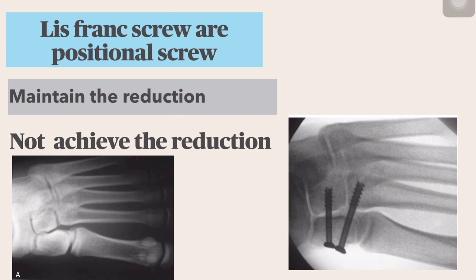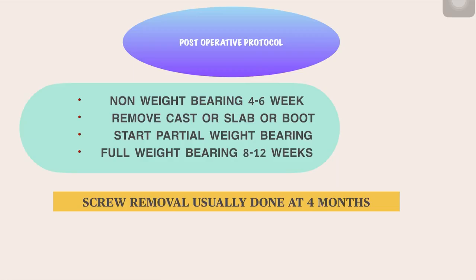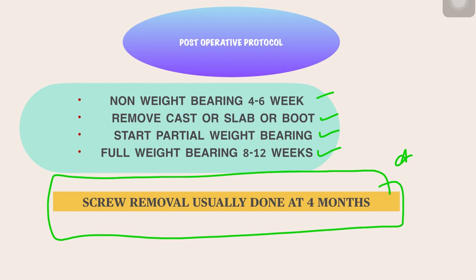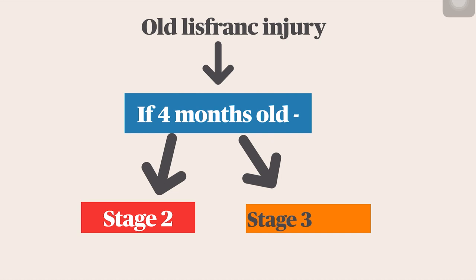If there is both intercuneiform diastasis and Lisfranc diastasis, always fix the intercuneiform first, then place the Lisfranc screw. Postoperative protocol: keep the patient non-weight-bearing for four to six weeks, then remove the slab and start partial weight bearing for the next four weeks, then full weight bearing for eight to twelve weeks. Screw removal is usually done at four months; otherwise in some patients the screw breaks.